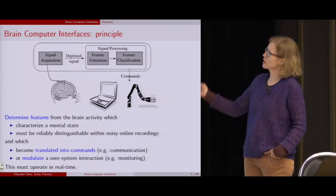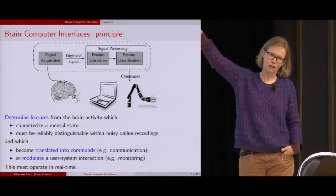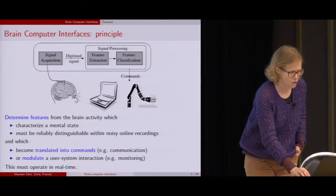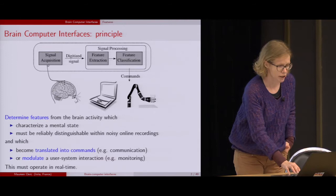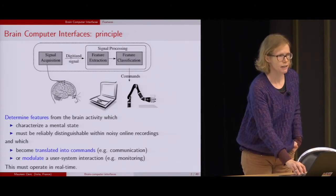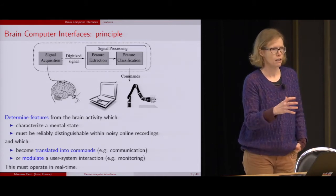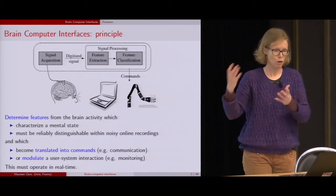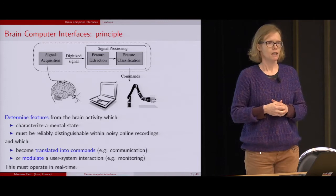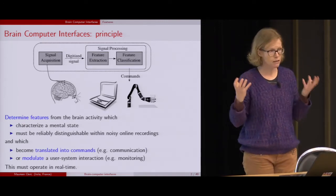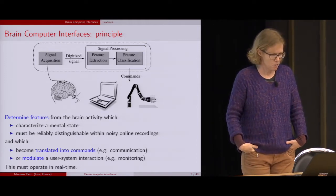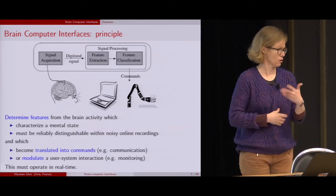The principle behind the brain-computer interface is a loop in which the user is part of this loop — that's pretty important. This user has brain activity that we're measuring through a device, which can be invasive or non-invasive. In this talk it will be mostly non-invasive devices like electroencephalography. This data acquired through a device is then processed with signal processing to extract features, which are parts of the brain activity that can be linked to a mental state. We're going to be able to classify between different types of mental states.